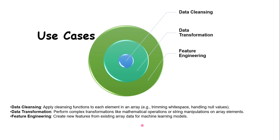Coming to use cases, the first one is data cleansing, which is a prerequisite in most data engineering projects. The transform function is well-suited to remove unwanted characters from a string, handle white spaces, handle null data, populate missing values, handle duplicate data, or standardize data types. These are the kind of data cleansing operations we perform in all data engineering projects, and transform is very suitable for these.